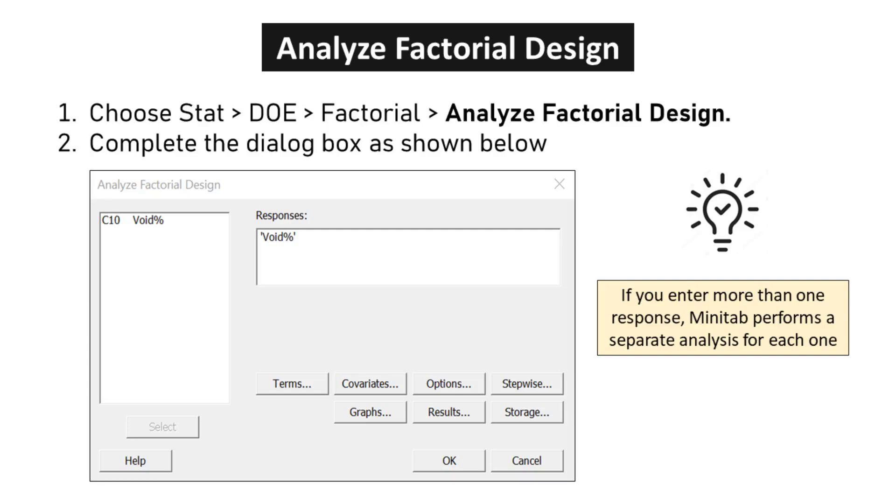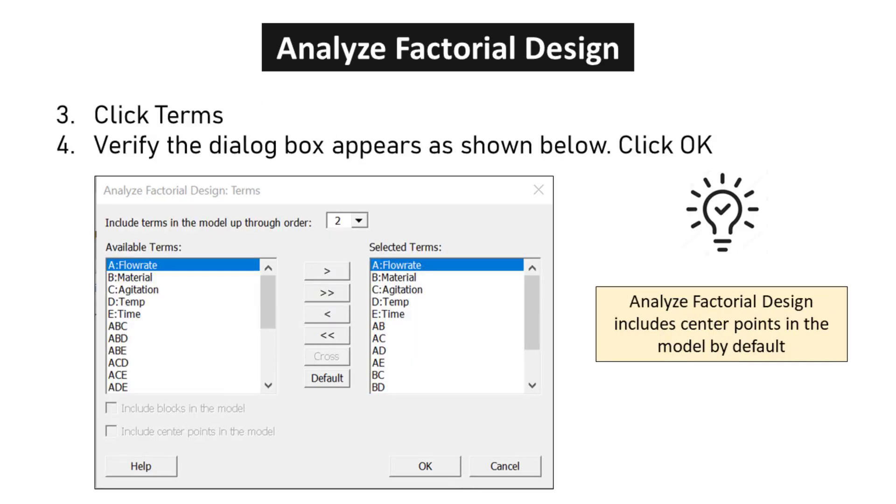Choose STAT, DOE, Factorial, Analyze Factorial Design. Complete the dialog box as shown below. Click Terms. Verify the dialog box appears as shown below. Click OK.